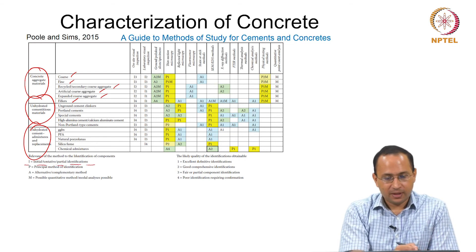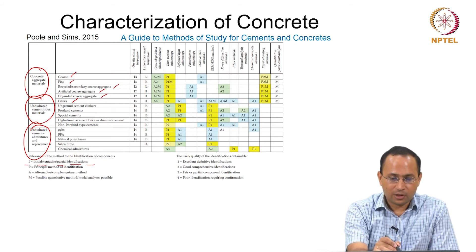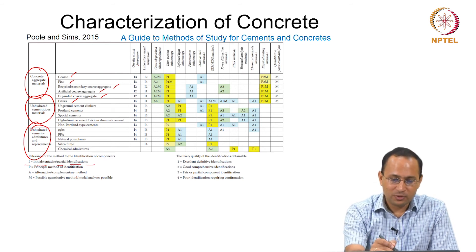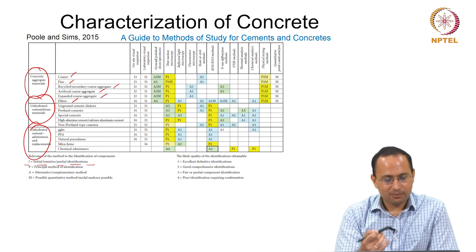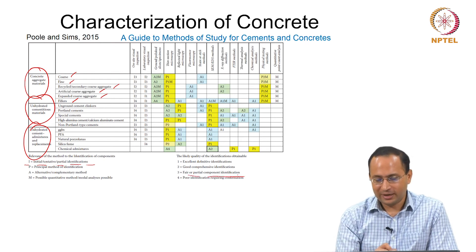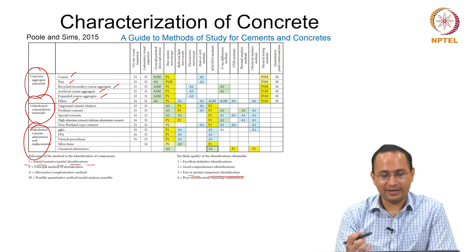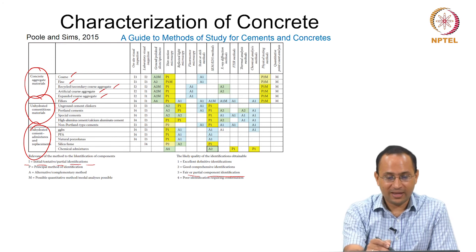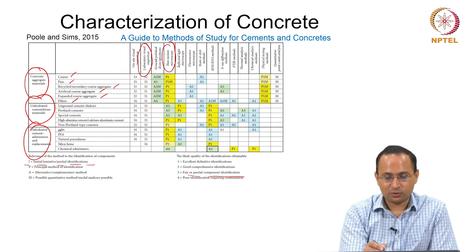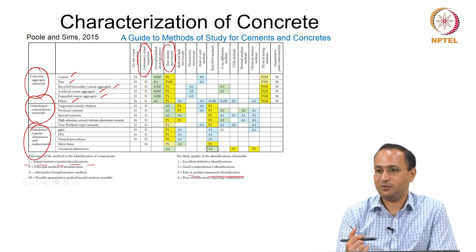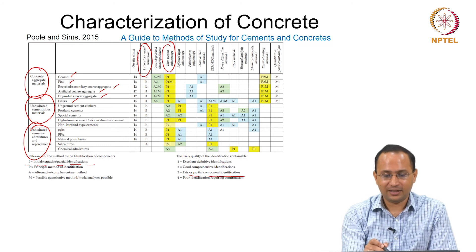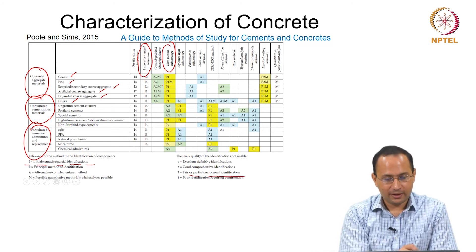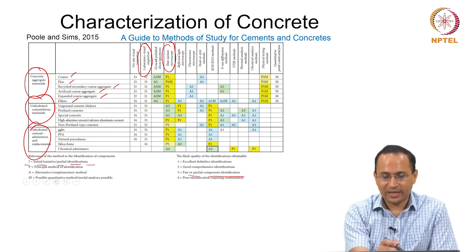Based on the technique, you can assess the level of identification. 'I3' means initial tentative, providing initial assessment with fair or partial component identification — not excellent, you will have to use other techniques. For thin section microscopy, you see P1, where P means it is a principal method of identification with excellent, definitive identification. As you go towards P, you have more confidence. Reflected light microscopy, fluorescence microscopy, SEM, and XRD are among the listed techniques.